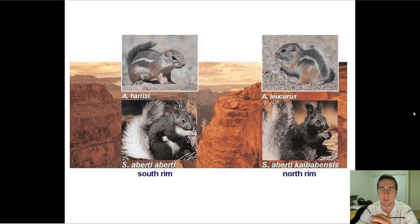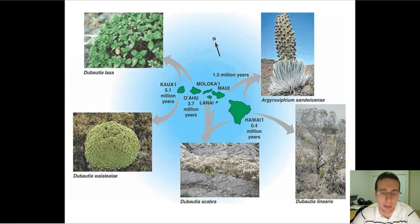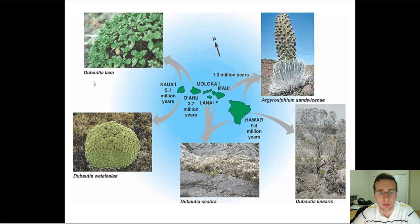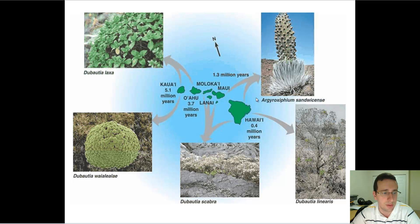If you need actual evidence of speciation — if it bothers you that we haven't seen macroevolution actually happen — we actually have done experiments to see it. These different species of the same kind of plant look very different from each other, but they are all recent evolutionary events that happened in the highlands of Hawaii. They are now incapable of reproducing with each other because of so many accumulated differences. In one case they evolved so differently they are called a different genus altogether. Some of these species did not even exist as early as 300 years ago.